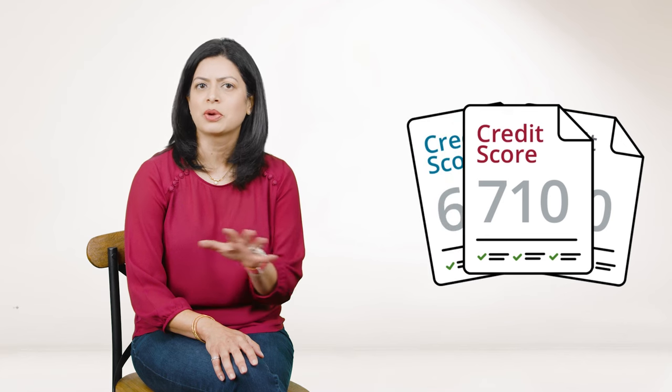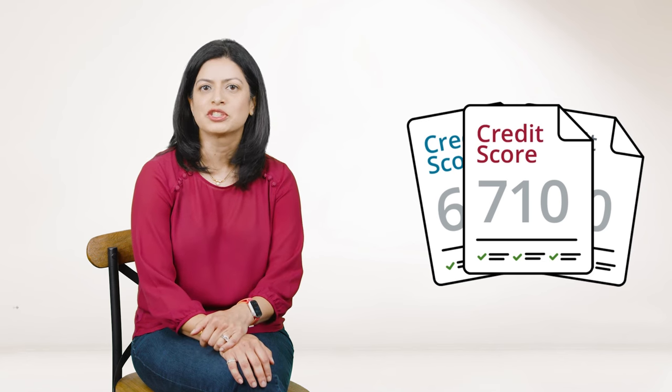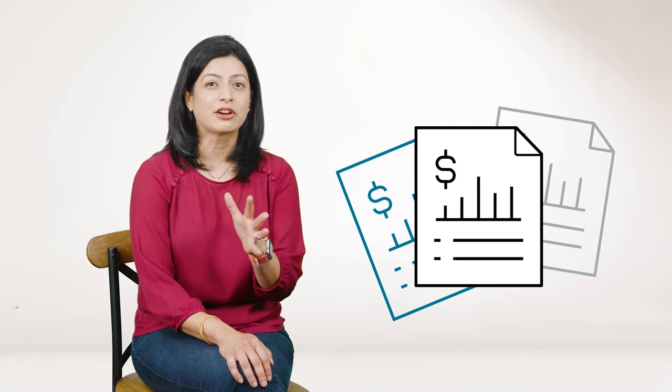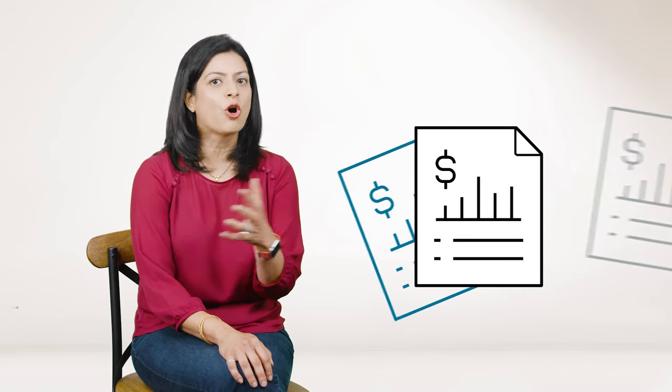You have more than one credit report. Each of the three nationwide consumer reporting agencies—Equifax, TransUnion, and Experian—receive information from your lenders or creditors. Sometimes the information may vary between agencies because not all lenders report to every reporting agency.